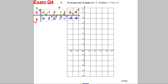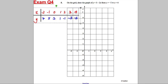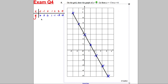Plot negative 2 with 7, negative 1 with 5, 0 with 3, 1 with 1, 2 with negative 1, 3 with negative 3, and 4 with negative 5. Again, we've formed a perfect straight line. If you didn't have that, you know you made a mistake.